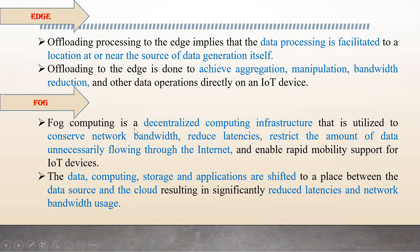Fog computing is a decentralized computing infrastructure. This decentralized infrastructure is utilized to conserve data bandwidth, reduce latency, and restrict the amount of data flowing through the internet. This enables immediate response and mobility of IoT devices. The data computing, storage, and applications are shifted to a place between the data source and the cloud, resulting in reduced latency and sufficient use of network bandwidth.